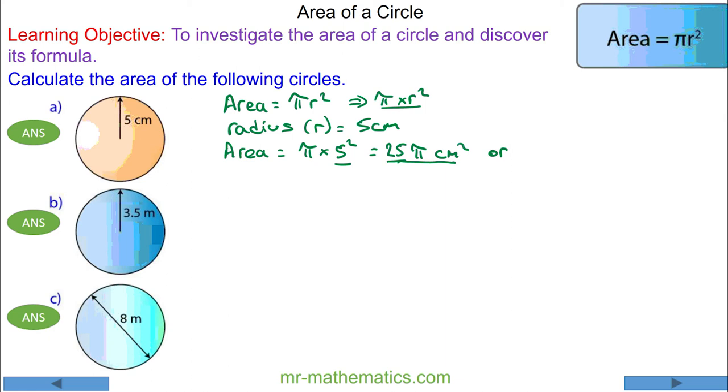25π is a multiple of π. We can approximate it as a decimal, which is 78.5 centimeters squared to three significant figures. For question b, we're going to use πr². The radius is 3.5 meters.